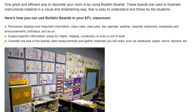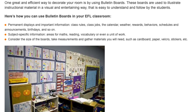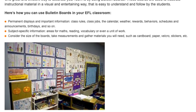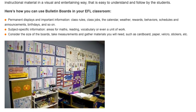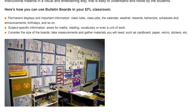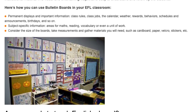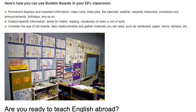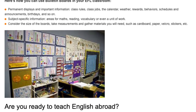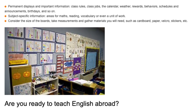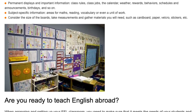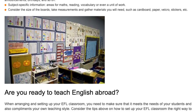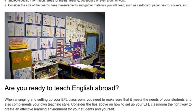Permanent displays and important information: class rules, class jobs, the calendar, weather, rewards, behaviors, schedules and announcements, birthdays, and so on. Subject-specific information: areas for maths, reading, vocabulary, or even a unit of work. Consider the size of the boards, take measurements, and gather materials you will need, such as cardboard, paper, velcro, stickers, etc.